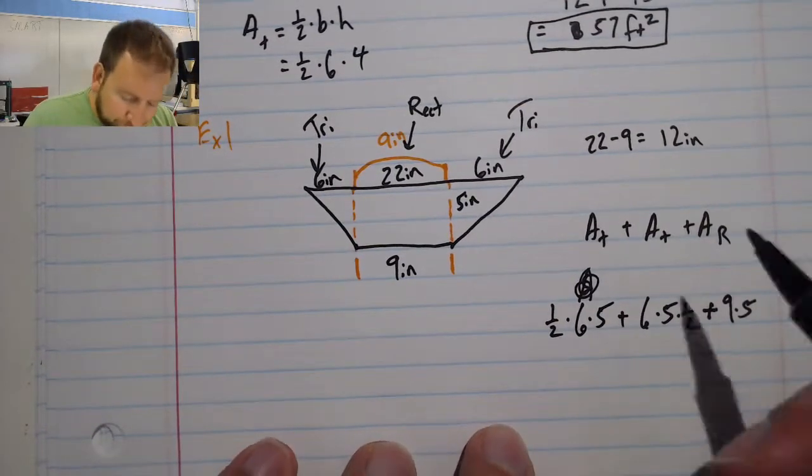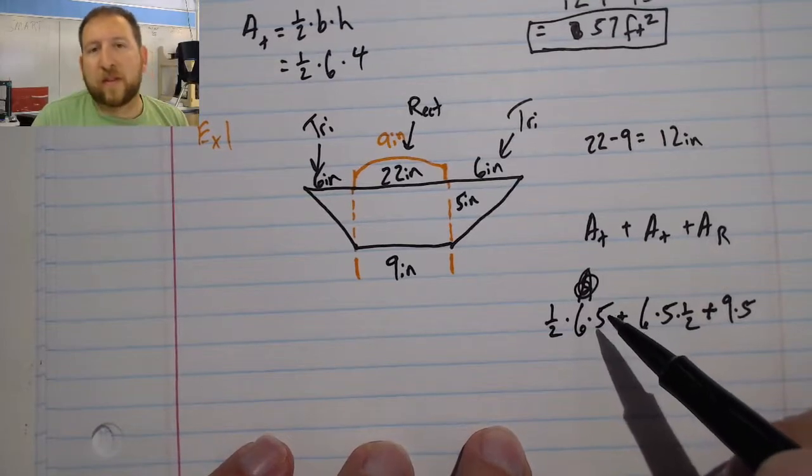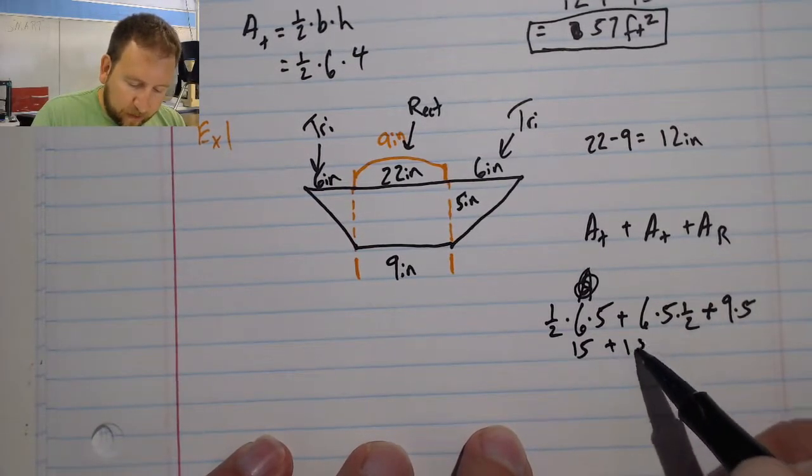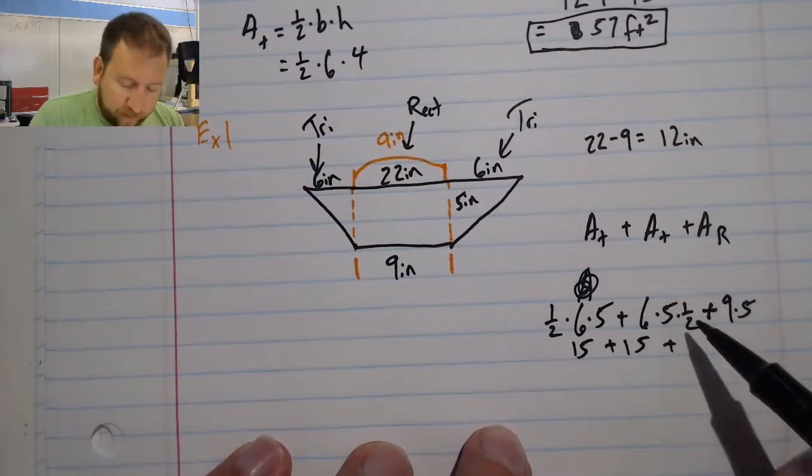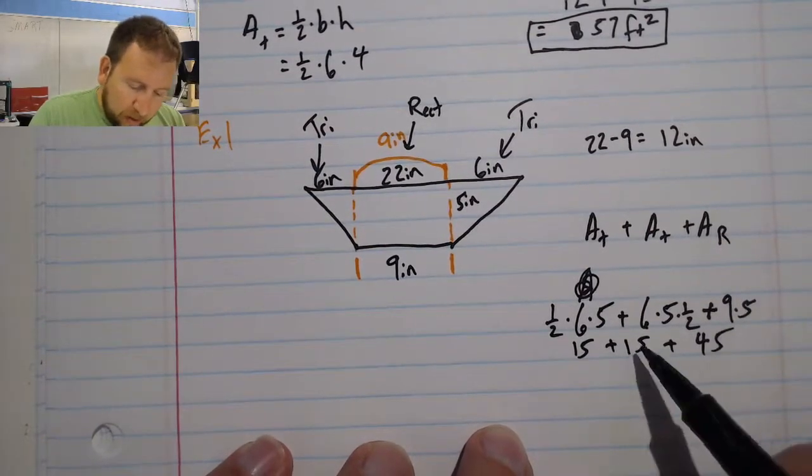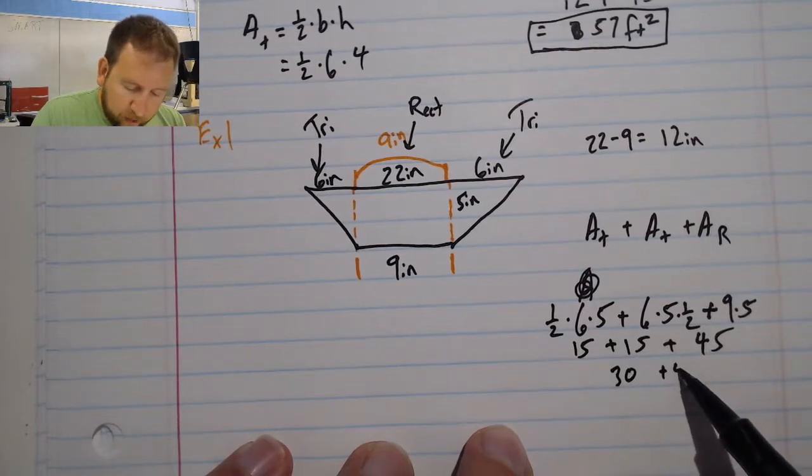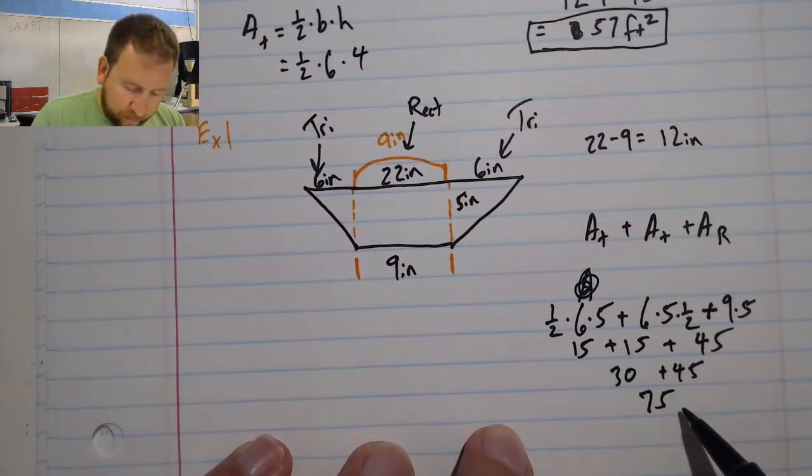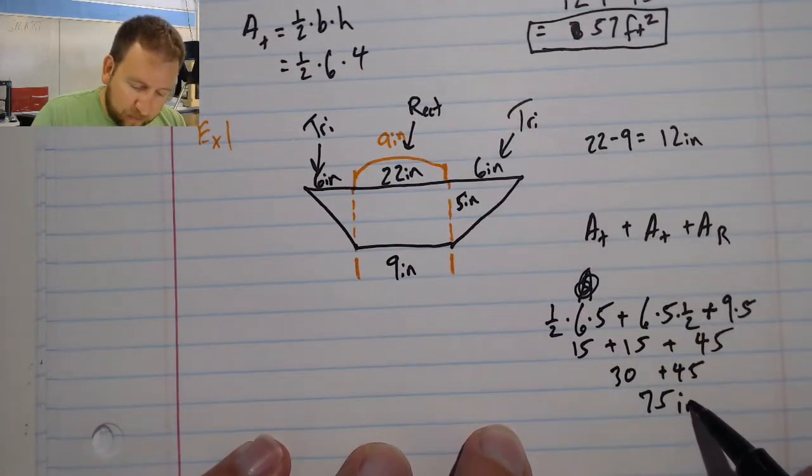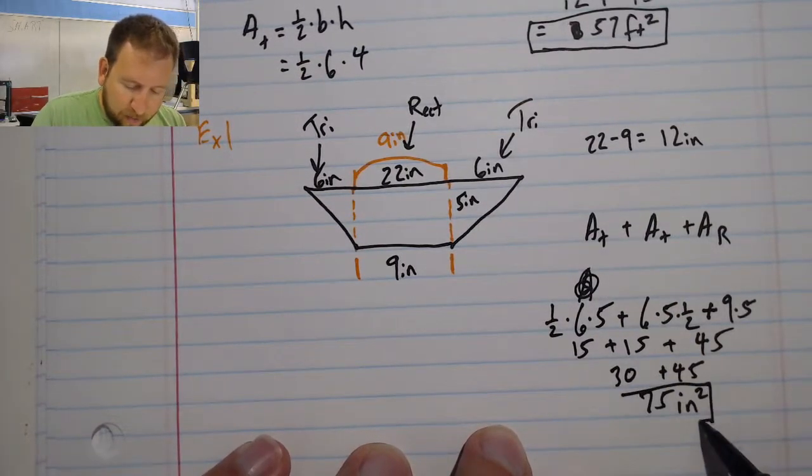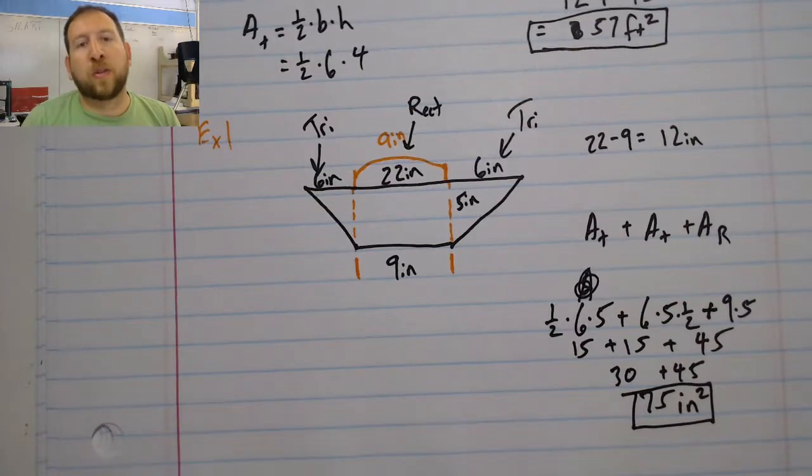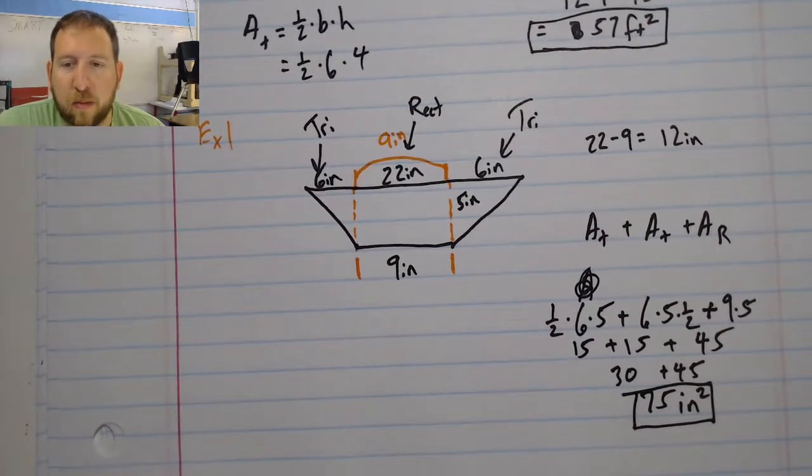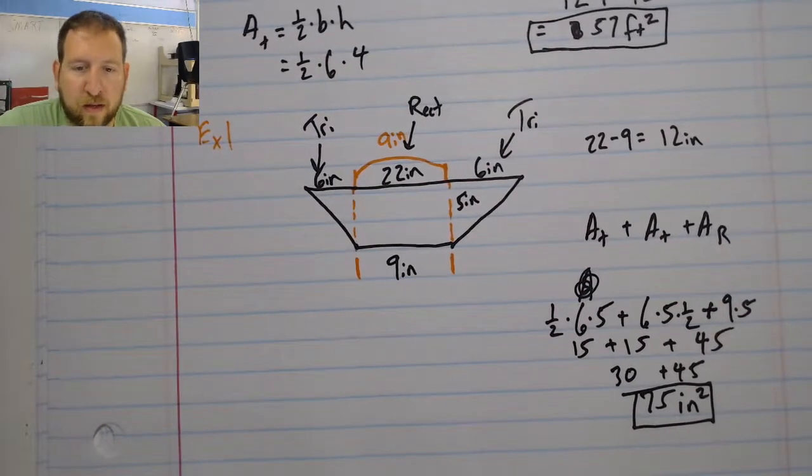6 times 5 is 30 times 1 half is going to be 15. 15 plus 15 plus 9 times 5 is 45. This is going to be 30 plus 45, and that is 75. Now I need my units. I am in inches, and since I'm in area, I am going to need to remember to put the correct area in.